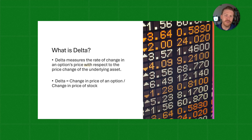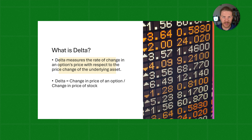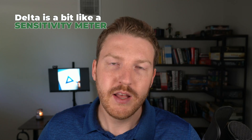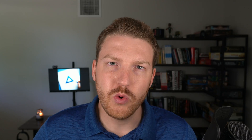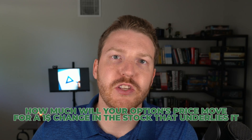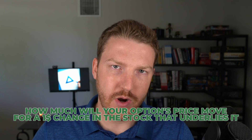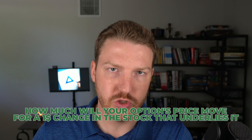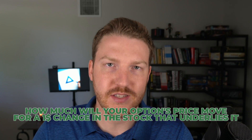So what is Delta? Delta measures the rate of change in an option's price with respect to the price change of the underlying asset. Delta is a bit like a sensitivity meter that tells you how much your option's price will move for a $1 change in the stock that underlies it.